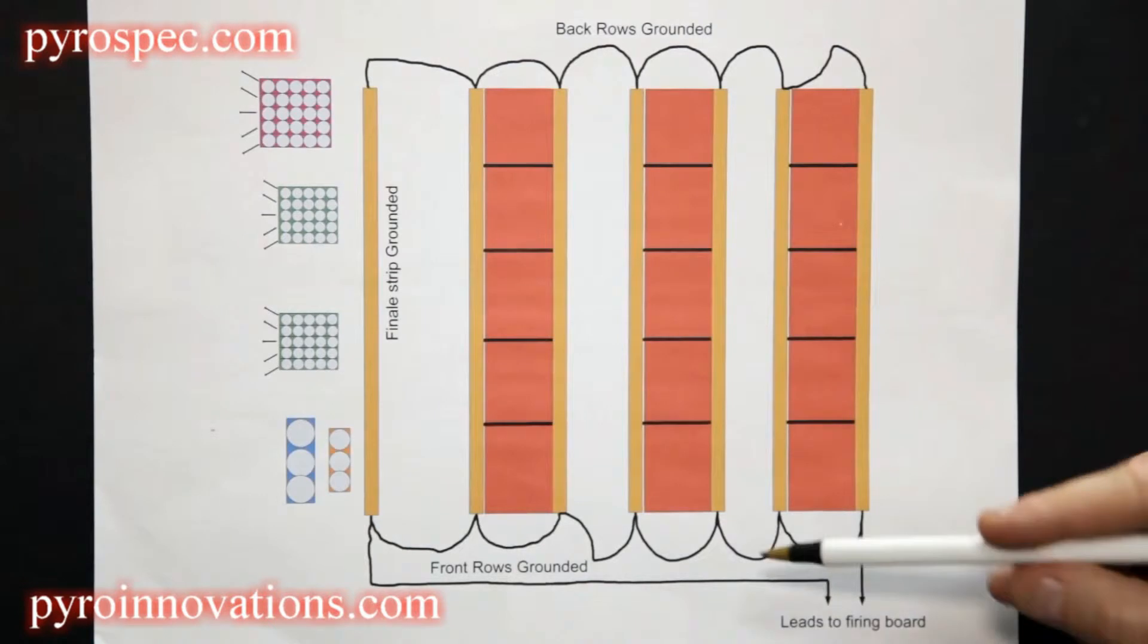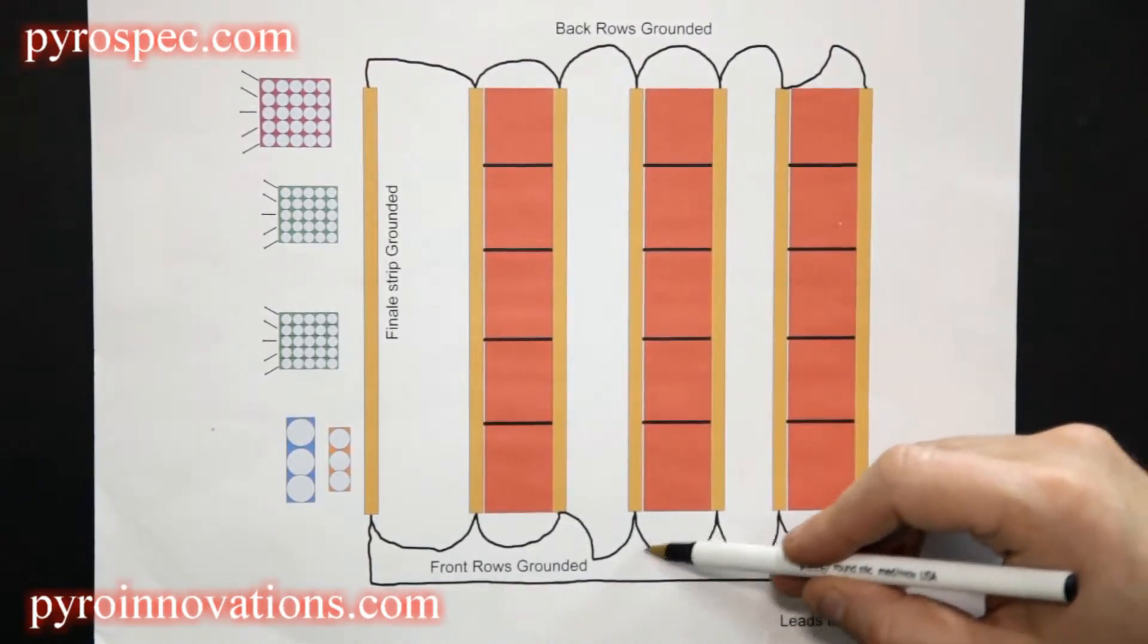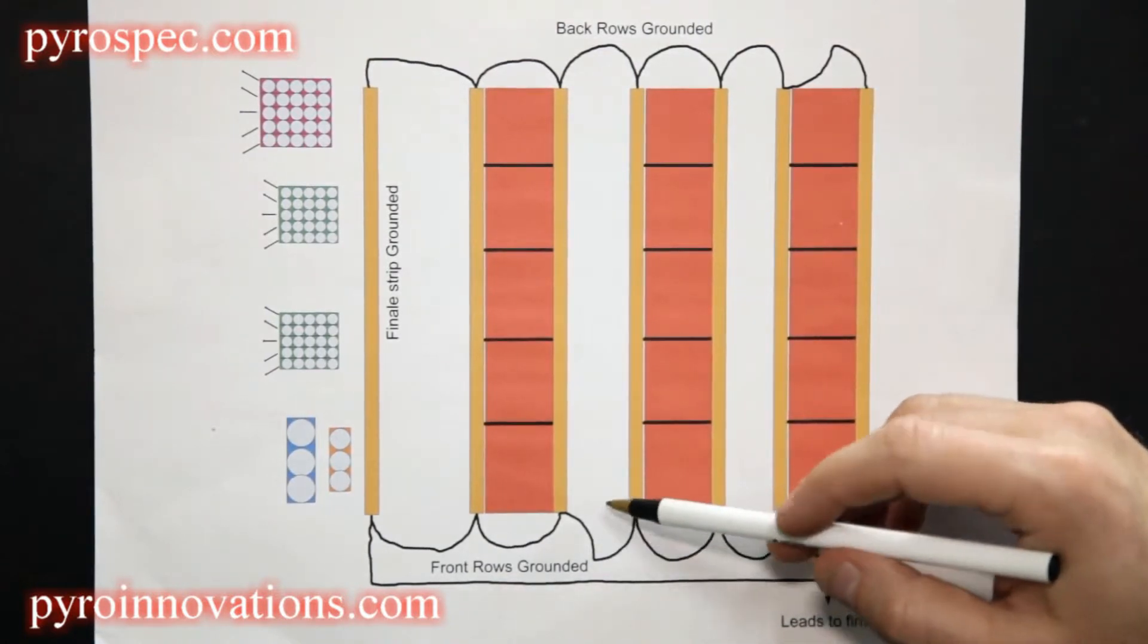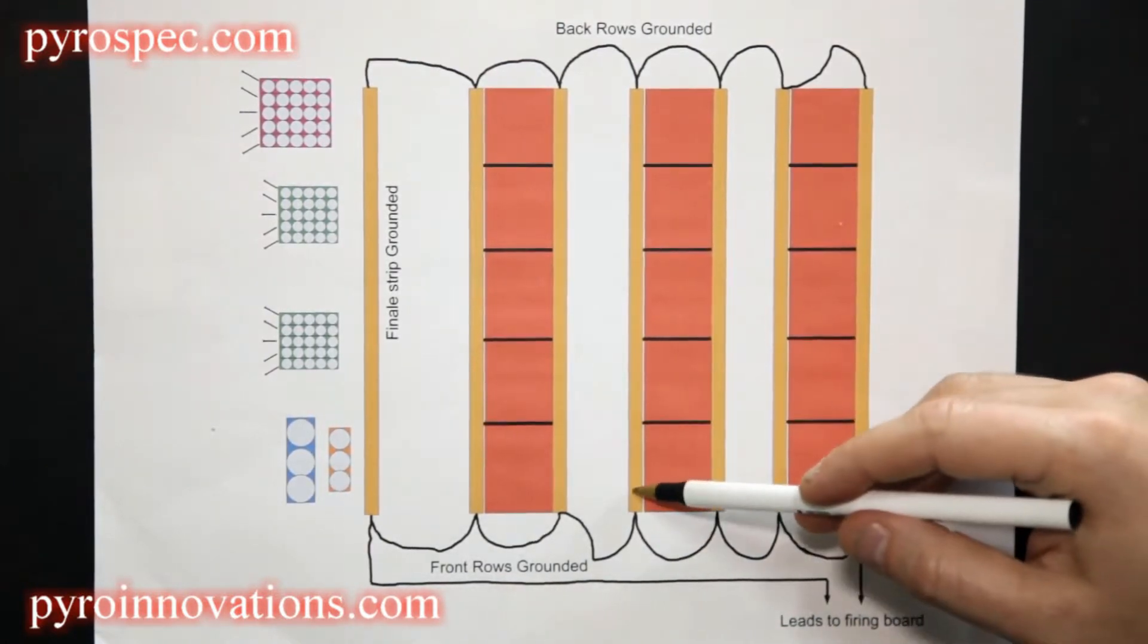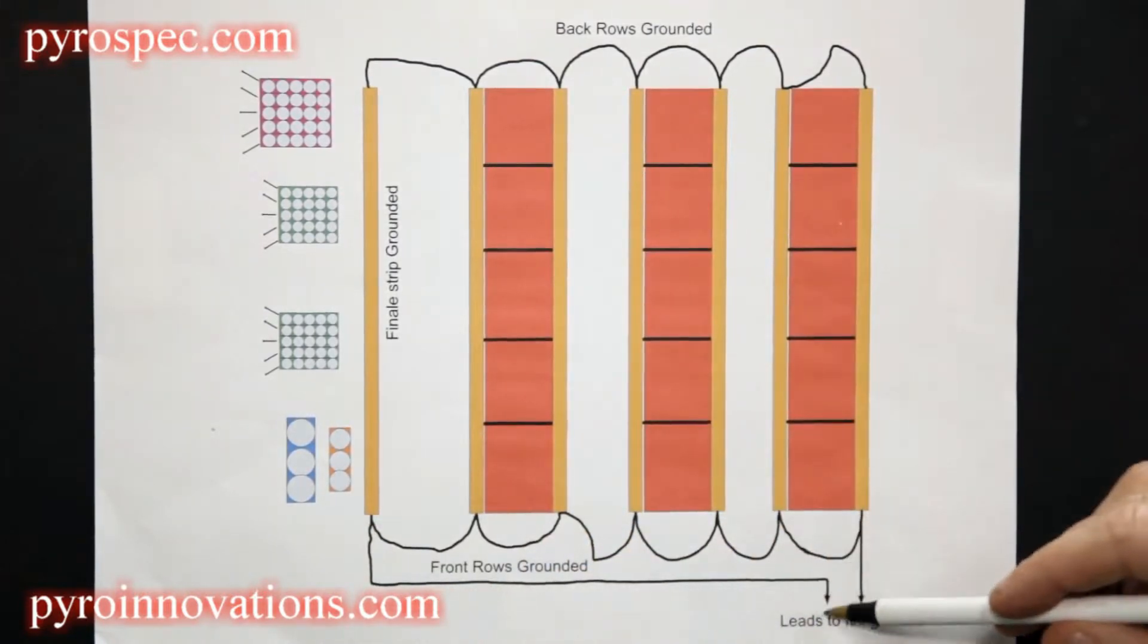What that does is if during the show a break occurs in this ground wire here, there is still a return path or a ground for all of these strips through this secondary home run line.